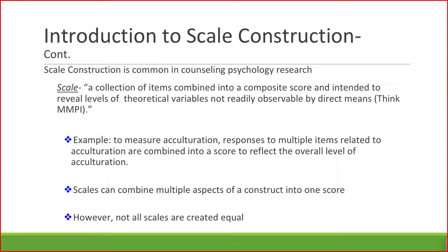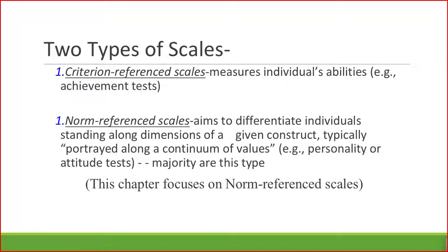We are looking specifically at norm reference scales. Norm reference scales aim to differentiate individuals' standing along dimensions of a given construct, whereas criterion reference scales measure individual abilities, such as achievement tests. Heppner's chapter focuses on norm reference scales.